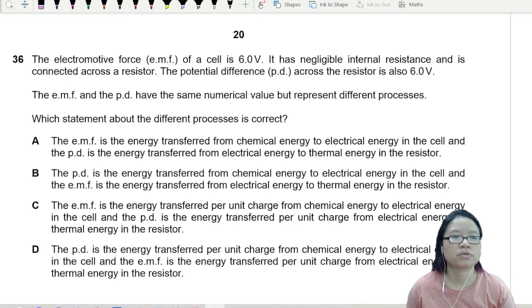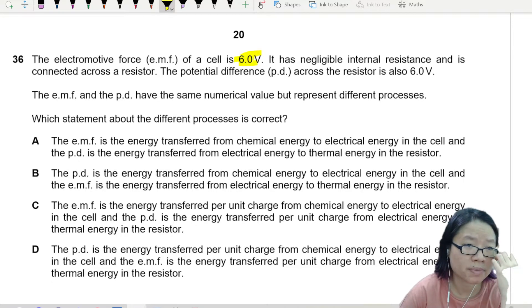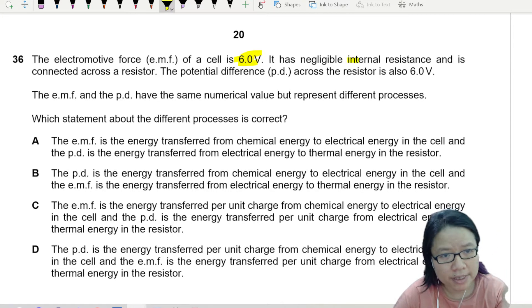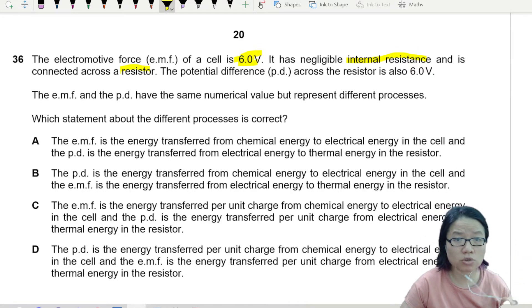Wow, look at all the words. Okay, let's read. The EMF of a cell is 6 volt. It has negligible internal resistance and is connected across a resistor. The potential difference across the resistor is also 6 volt.